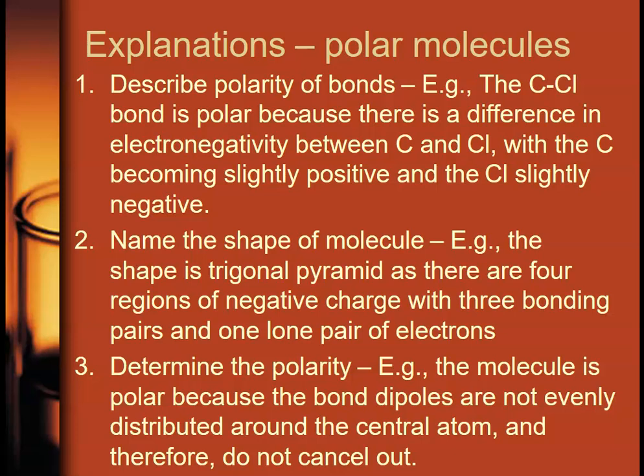You have to be able to talk about the shape of the molecule. Now, at Level 3, typically, they combine the shape and polarity into one question. So you've got to be able to describe the shape and the polarity as one. So you want to talk about what shape is it, how many regions of negative charge surround the central atom, how many bonding, how many lone pairs, and therefore, what is the overall shape?